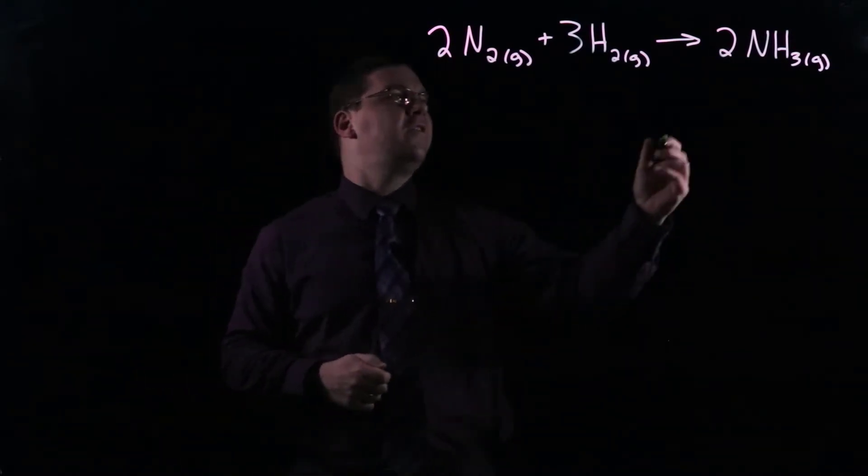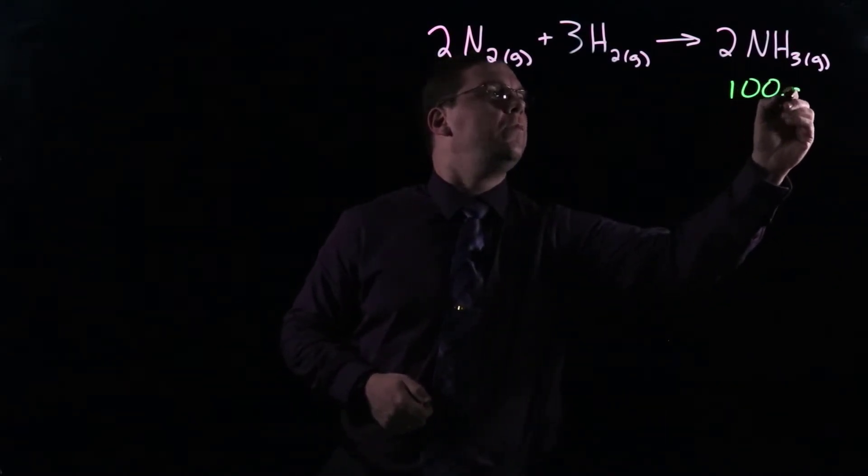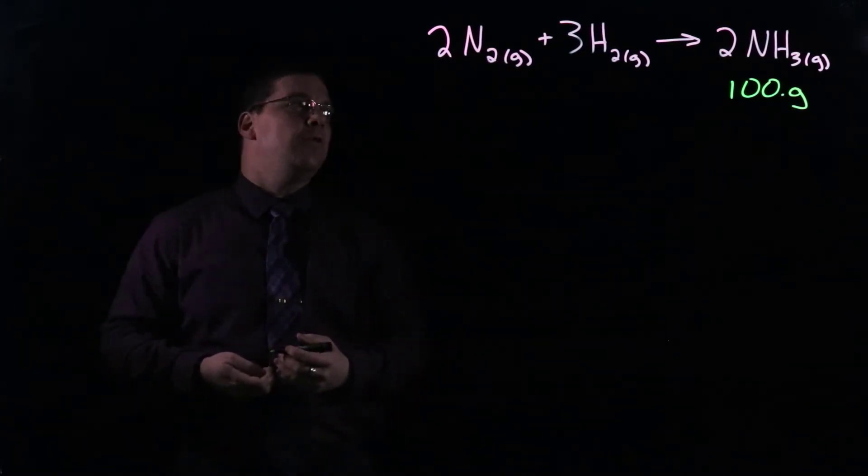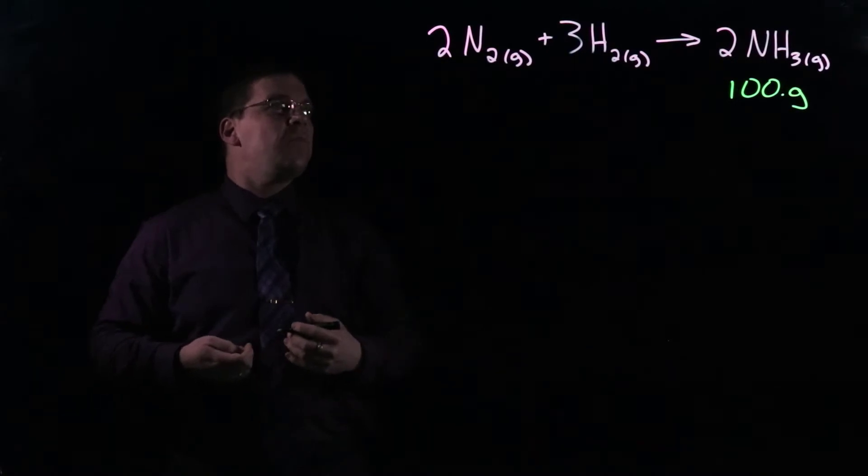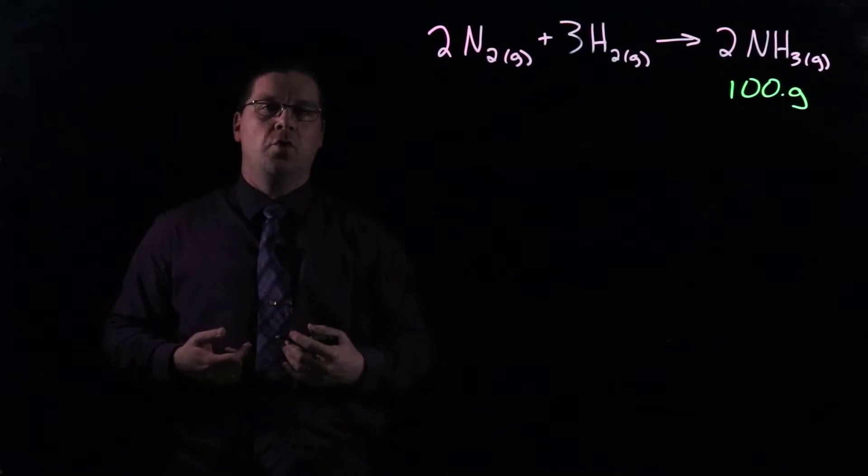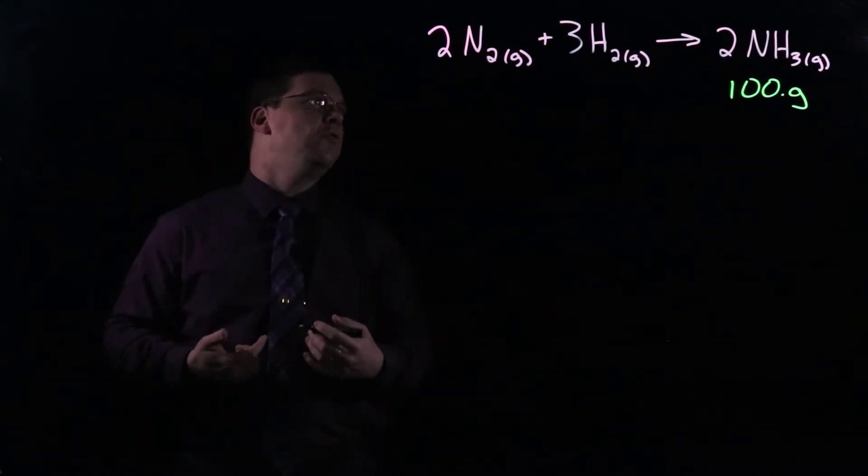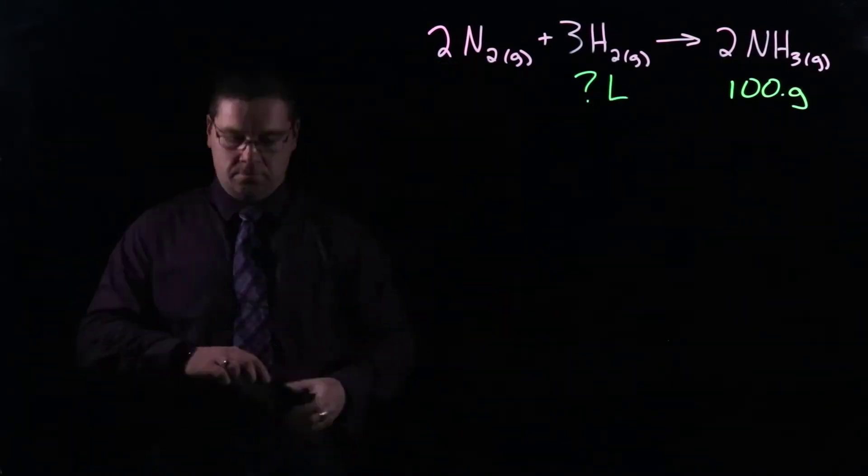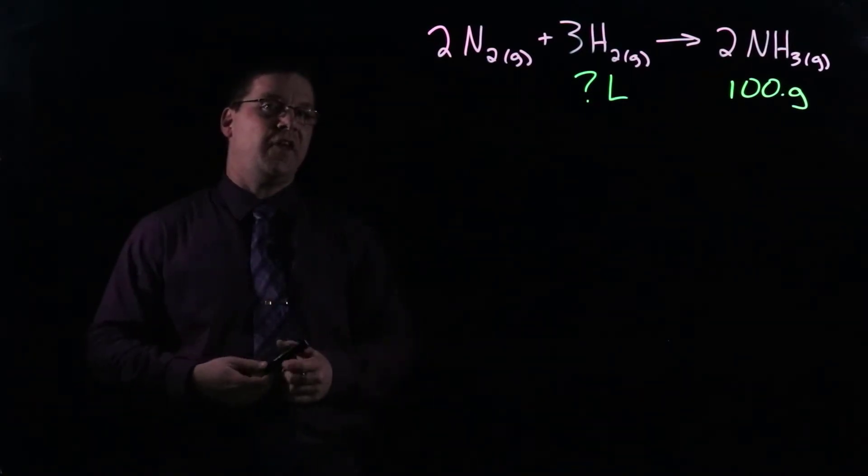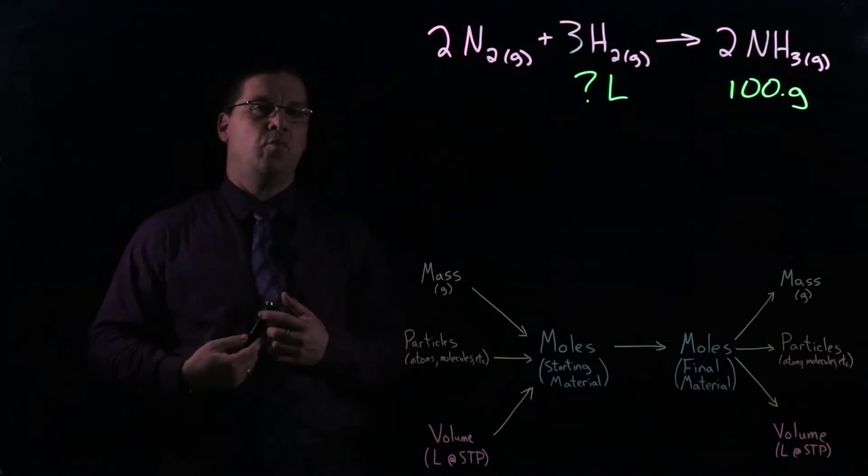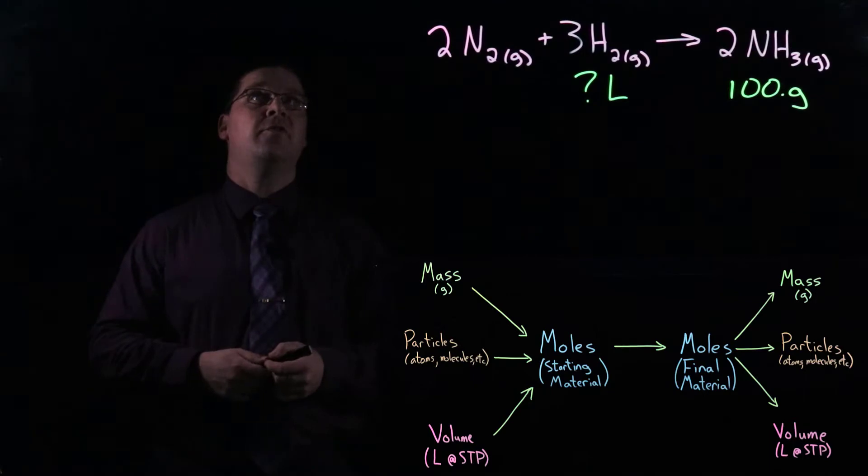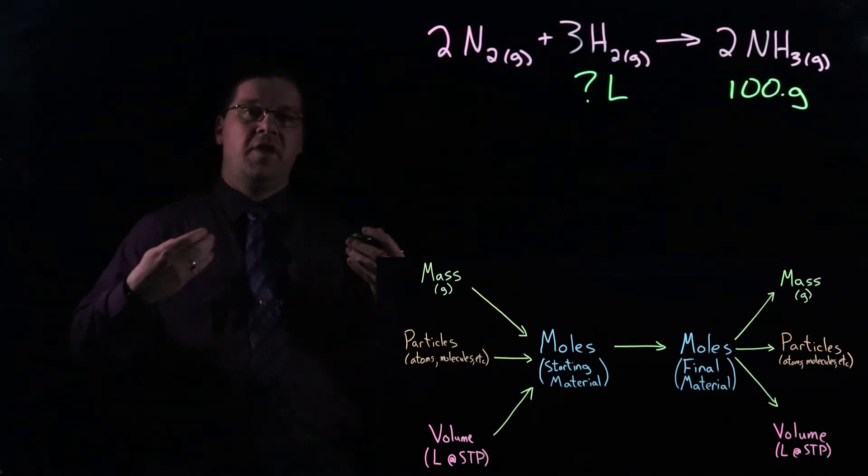And so you're starting at the end and working backwards. But the process is exactly the same. So let's say we have 100 grams of ammonia is what we are after. And we want to know how much or what volume of hydrogen gas are we going to need in order to generate that 100 grams of ammonia. So the process that we're going to use is exactly the same process that we've looked at in other stoichiometry problems. We're going to start with the given amount that we are given in the problem.